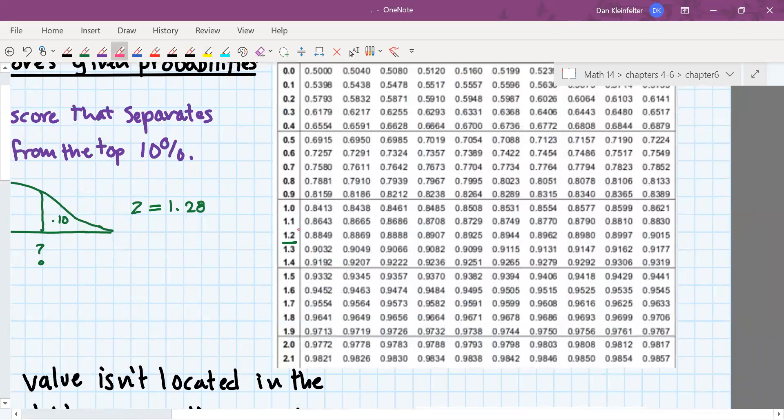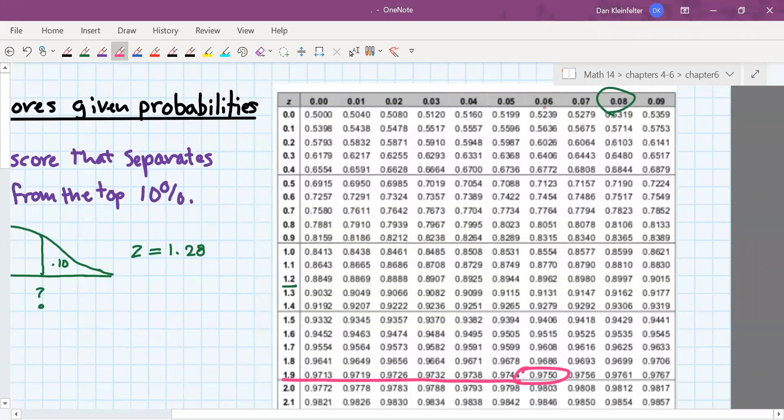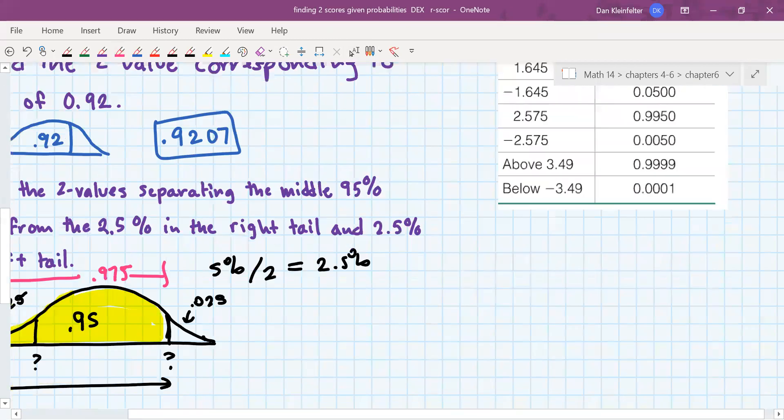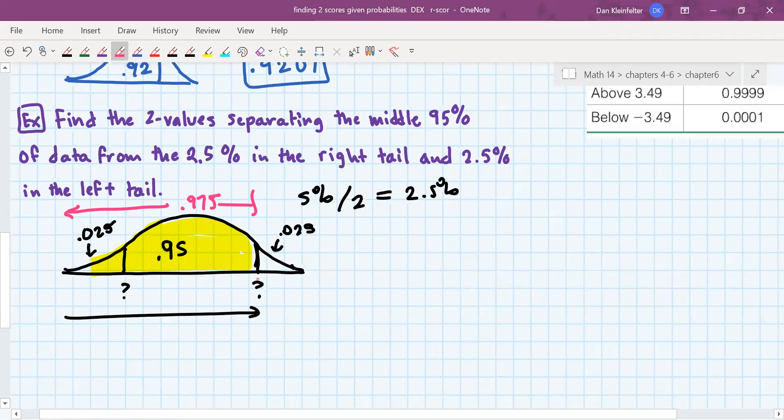So once again, taking a look back at the table, we need 0.975, and that's here, 1.96. So our z's are plus and minus 1.96.